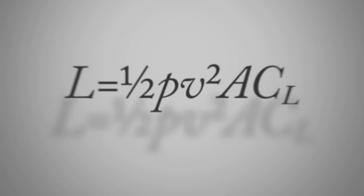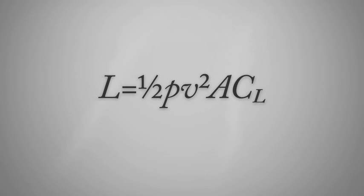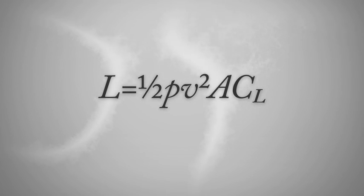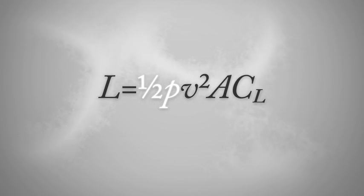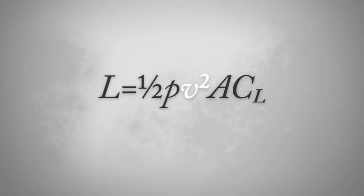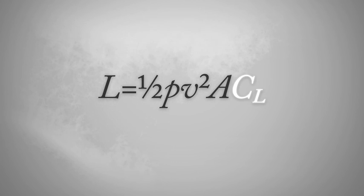The lift force can be calculated from the following equation: L equals one half P times V squared times A times CL, where L is lift, P is air density, V is wind velocity, A is surface area, and CL is the lift coefficient.